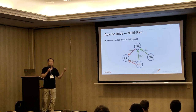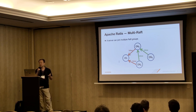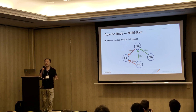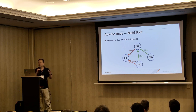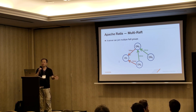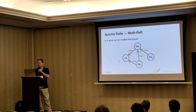In Ratis, we also have a feature called multi-Raft. Multi-Raft means that a single server can join multiple WAF groups. When they join multiple WAF groups, they can be a follower in one group and a leader for another group. For example, DN2 in this case is a follower and also a leader.